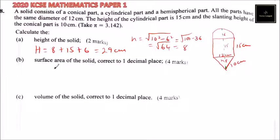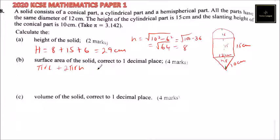Part B: surface area of the solid, correct to one decimal place. We need to find the surface area of the conical part, which is πrl. Then we get the curved surface area of the cylindrical part, which is 2πr multiplied by the height. Then we get the surface area of the hemispherical part, which is 4πr² divided by 2 because it is half.